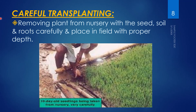The next cultivation practice is careful transplanting — removing the plant from the nursery with the seed, soil, and roots carefully. In SRI, the seedlings are above the soil, so with the help of the hand or an iron plate, we remove them carefully and place them in the main field at a proper depth of 2 to 3 centimeters for the roots.